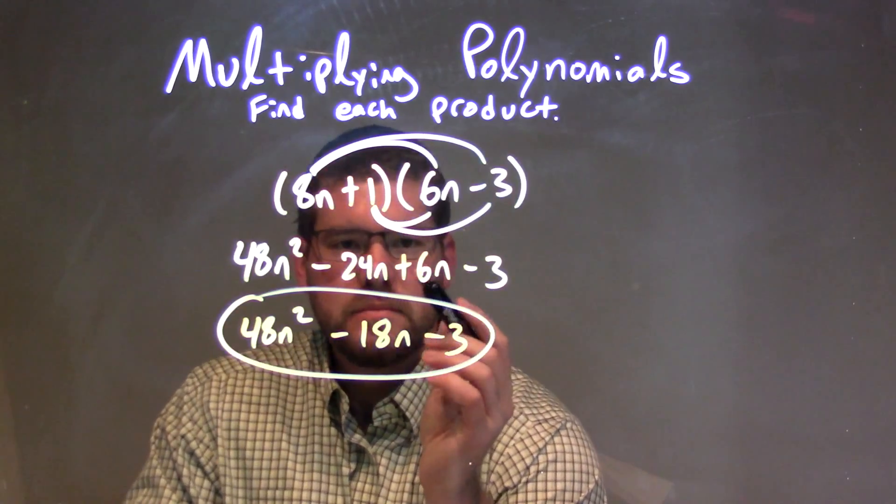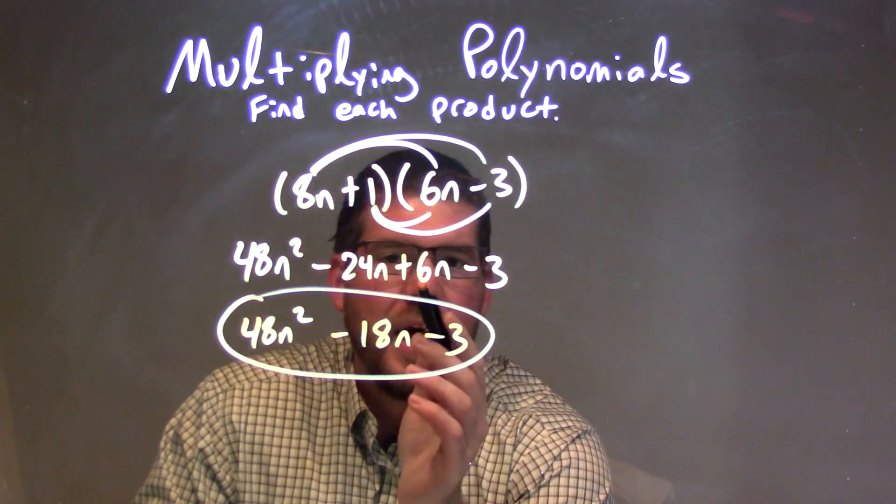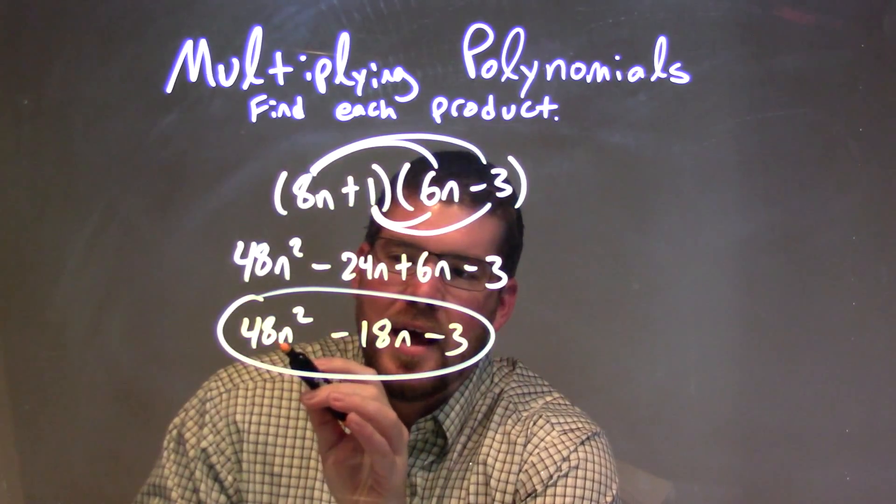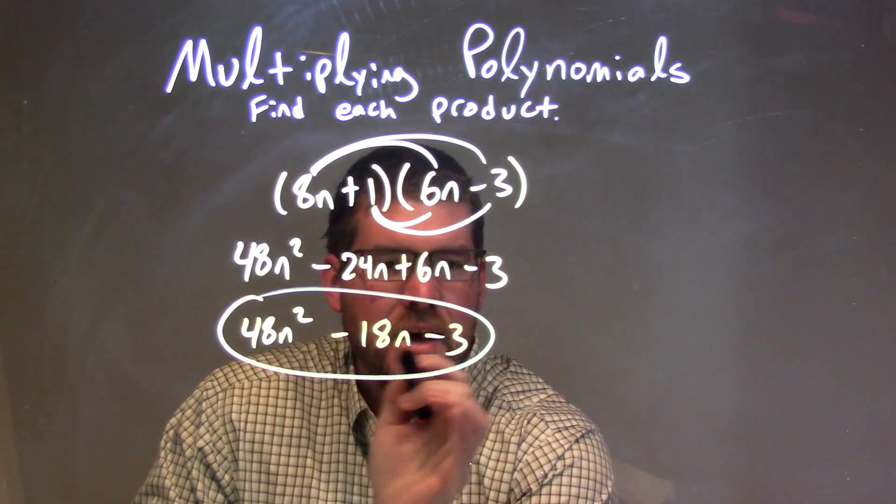Now we combine our like terms, the ones with n, which come out to be -18n. So our final answer is 48n² - 18n - 3.